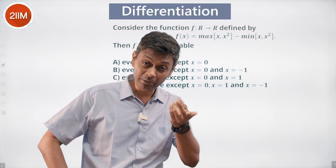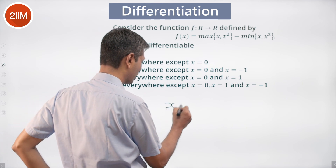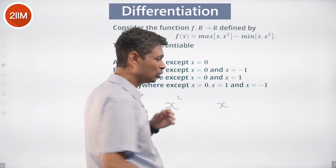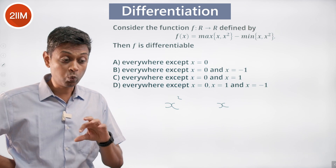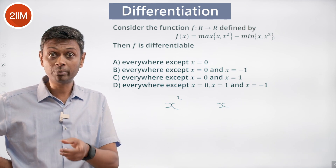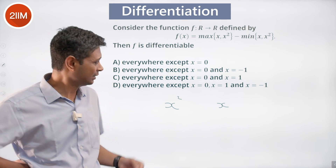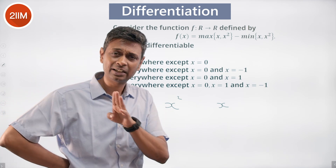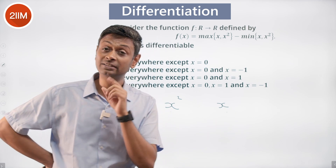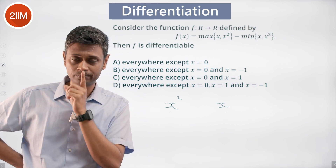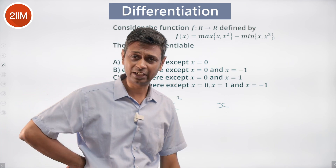We need to compare x² and x. For example, 2² vs 2, 3² vs 3, 5² vs 5 — x² is greater. But (1/2)² vs 1/2 — 1/2 is greater. So for numbers greater than 1, x² will be greater. For numbers between 0 and 1, x will be greater. When x is negative, x² is always positive and x is always negative, so x² is greater.